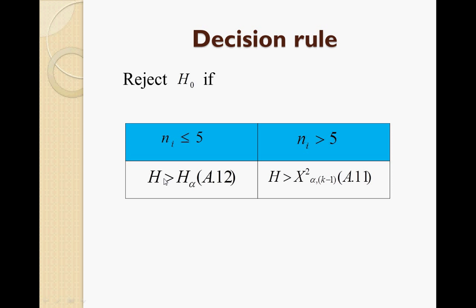For the decision rules: when Ni is less than or equal to 5, we reject H0 if H is greater than H-alpha using the Kruskal-Wallis table A12. When Ni is greater than 5, we reject H0 if H is greater than the chi-square critical value at alpha with k minus 1 degrees of freedom, from table A11.